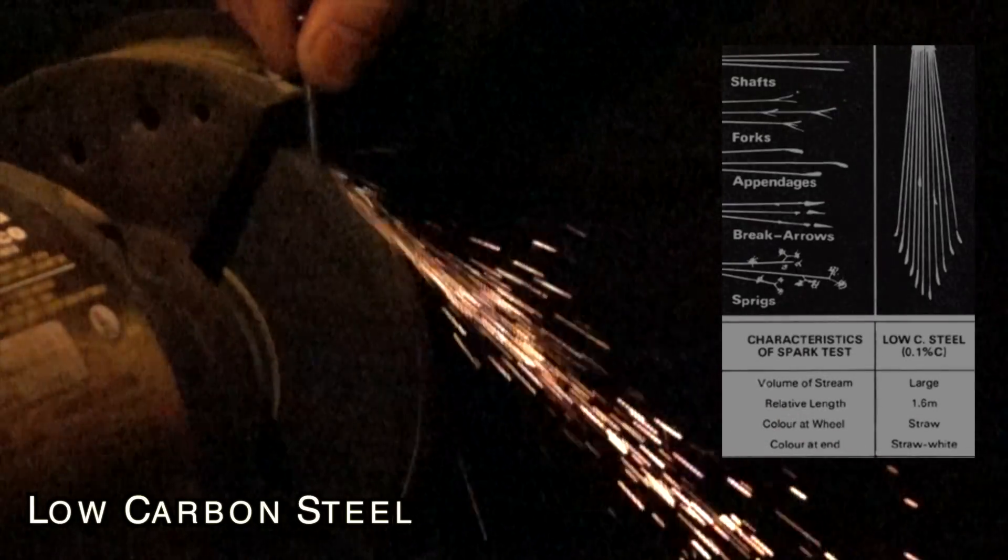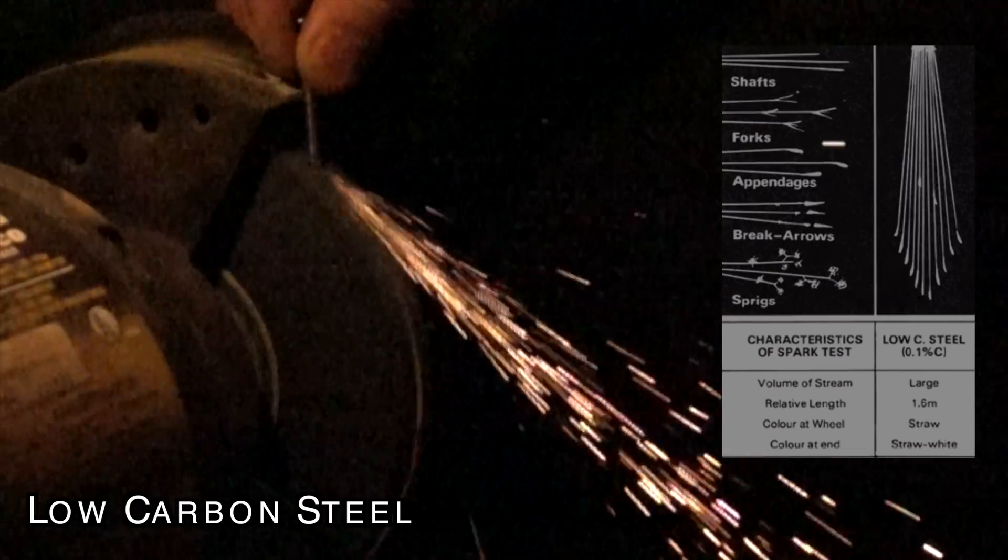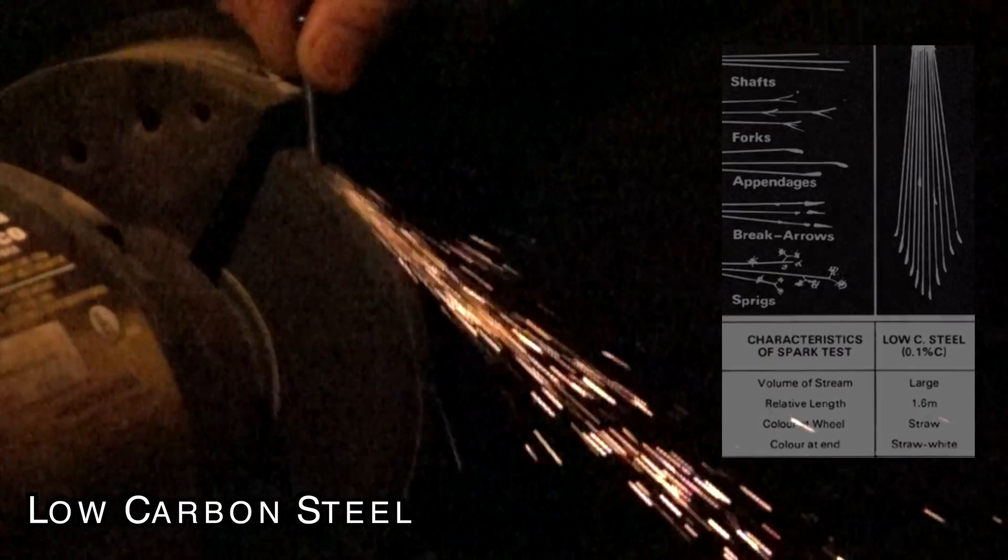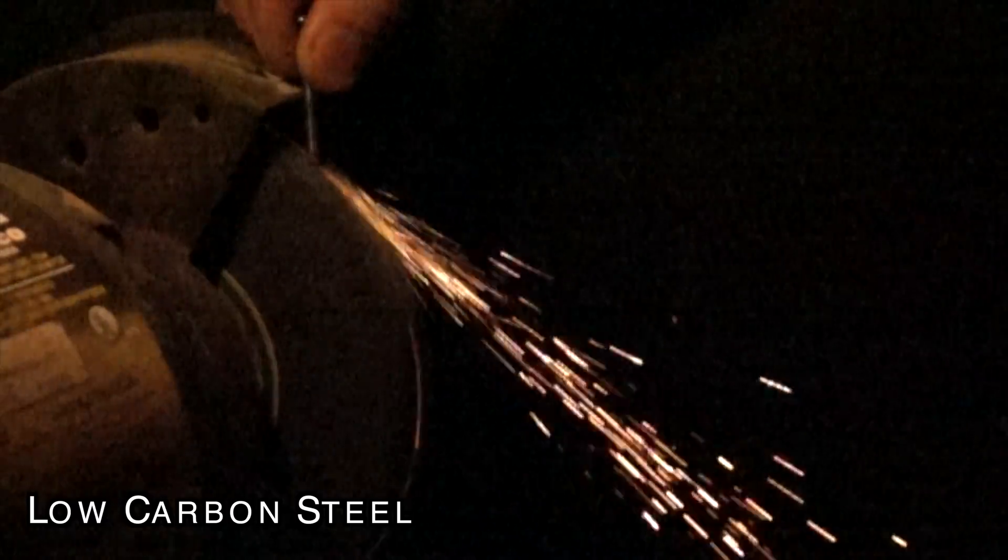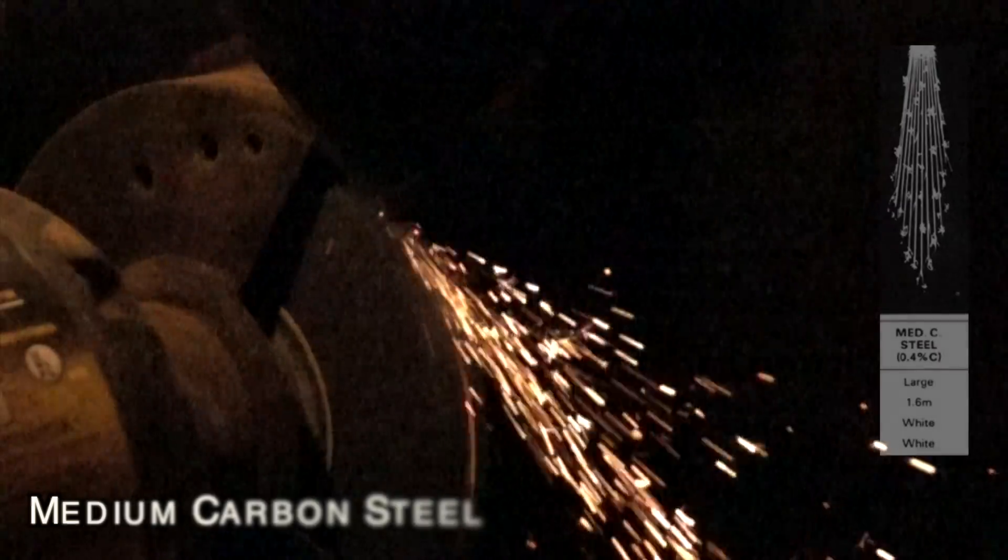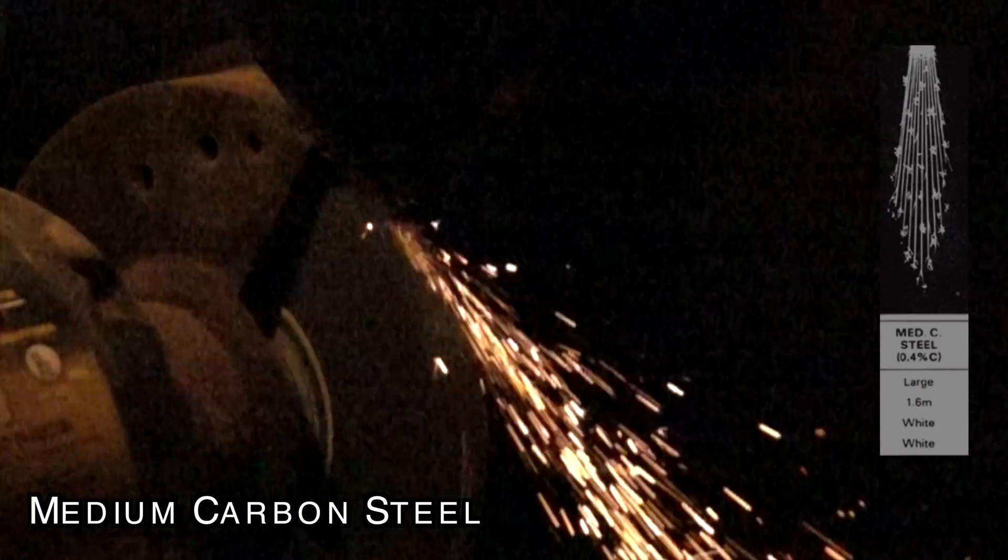Low carbon steel generally produces long fine sparks with little to no forks or sprigs. Steel that has a higher carbon content will produce more forks and sprigs.